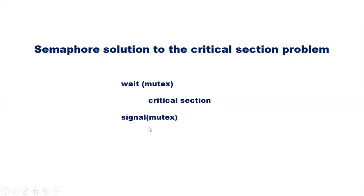Signal mutex means the semaphore value will be incremented by 1. This is how the binary semaphore works.